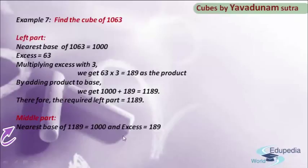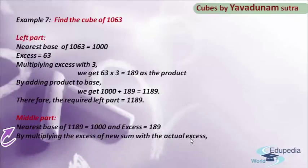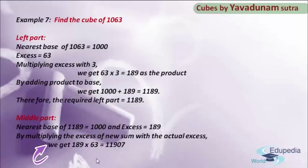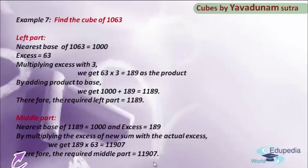After finding the nearest base and excess, in step number 2 we have to multiply the new excess with the actual excess. The new excess is 189 and the actual excess is 63. By multiplying 189 with 63, we get 11907 as the product. This new product 11907 is regarded as the required middle part.